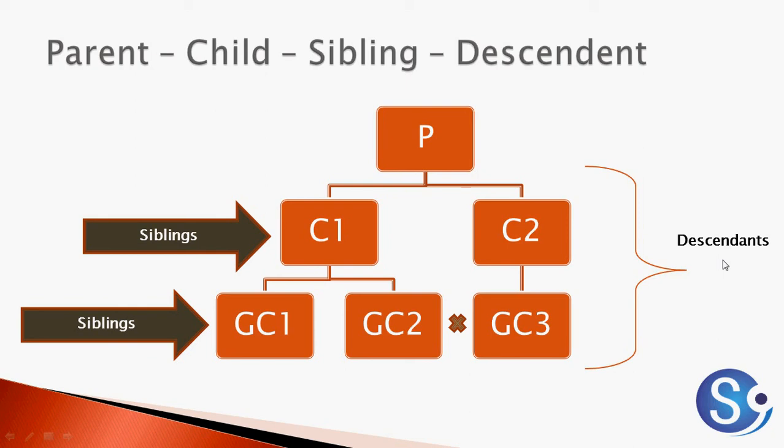When we say descendants, it includes all children. So P has descendants C1, C2, GC1, GC2, and GC3. This same concept is also applied to our HTML.